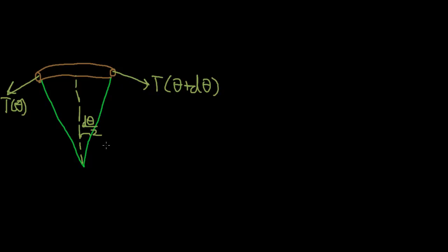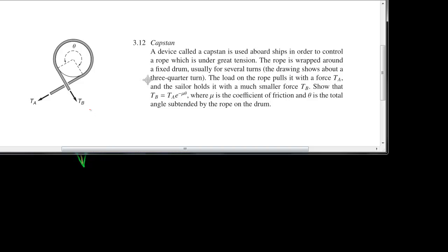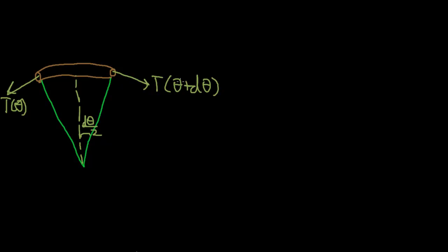This angle here should be dθ/2 on each side, so dθ/2 and dθ/2, with dθ as the total difference. Let's say θ is increasing, measured from the hold force TA, which is bigger than the load force. So we expect the force to be decreasing as θ gets larger, meaning T(θ + dθ) should be smaller than T(θ). Since this force is smaller and this force is bigger, the rope wants to slide this way, which means we also have a friction force acting this way — the friction force acts on the rope to try to prevent it from moving.